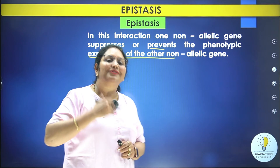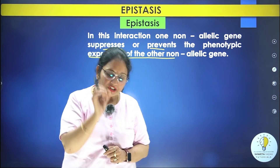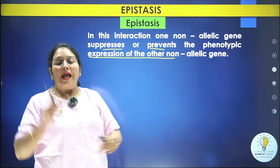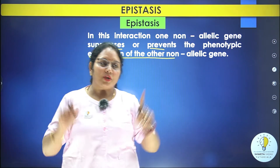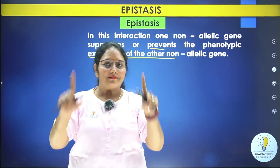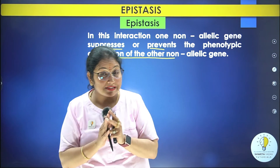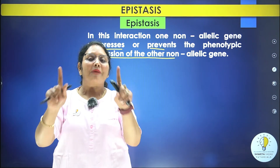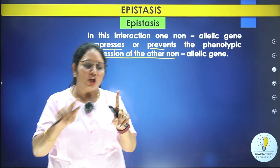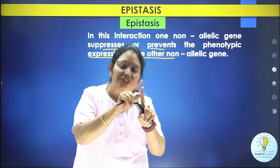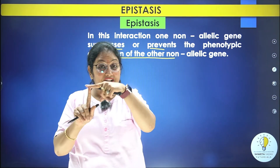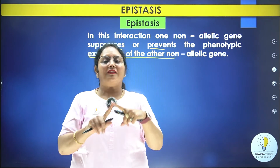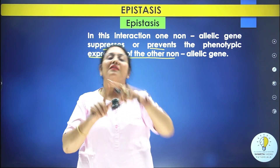Here the situation is a little different. In epistasis, when two genes interact with each other, one gene suppresses the expression of the other gene — it suppresses it, masks it.